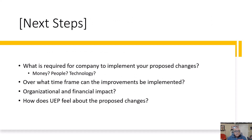The next topic is next steps. Where does the business go from here? What's required for the company to implement the changes you proposed — will it take money, people, technology, time? Over what time frame can the improvements be implemented? What's the organizational and financial impact of these changes? You might also want to indicate how your Urban Entrepreneur Partner feels about the changes you are proposing.